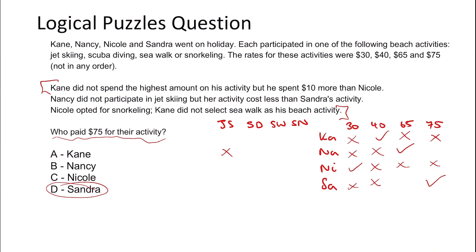Nancy's activity must have been $65 and Sandra's must be $75, giving us our answer: D, Sandra. You didn't actually even need to use the last line to get to this answer. That's really important — reading the question first means you don't fall into the trap of unnecessarily doing too much. This method works very well and allows you to fill in and extract more information.